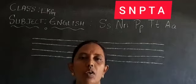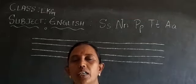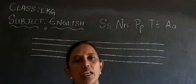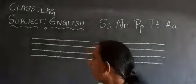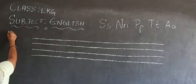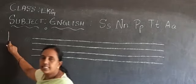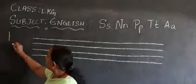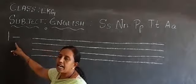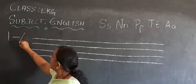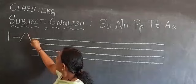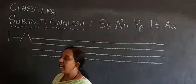Have you understood? Shall we start? We will revise lines and strokes. See here. This is a standing line. This is a sleeping line. This is a left slant line. And this is a right slant line.